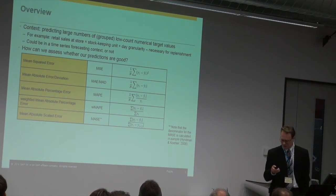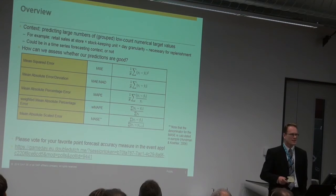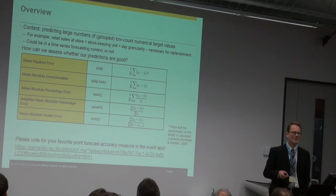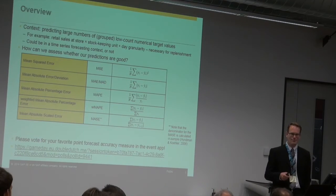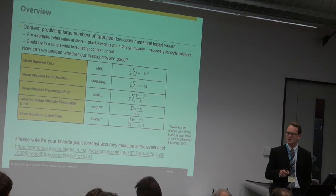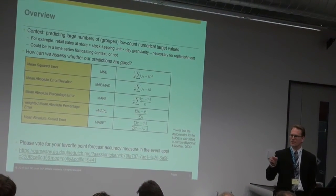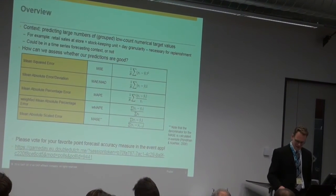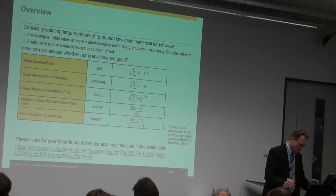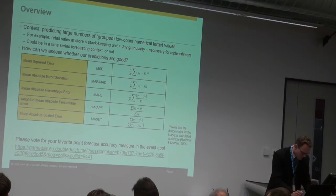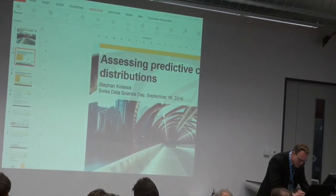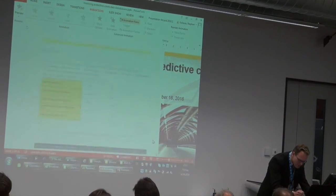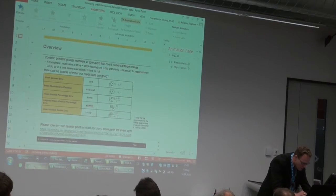Before I go further, I want you to do some work. Who has the event app installed on your smartphone? Please follow the app: go to the agenda, tap the top left menu, go to the agenda, select this talk, and you'll see 'Bewertungen' top right. Go there and vote for your favorite point forecast accuracy measure, and I'll show you if this works out.